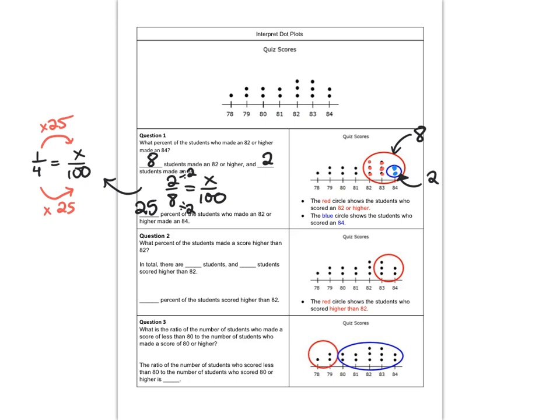All right, let's look at question 2 together and then I'm gonna let you try question 3. So question 2 says what percent of the students made a score higher than 82? So higher than 82 means they had to make an 83 or greater. That's these students right here in our red bubble. So there's five of them. So there were five students who scored higher than an 82. How many students are there in total? Let's count them. 1, 2, 3, 4, 5, 6, 7, 8, 9, 10, 11, 12, 13, 14, 15. So there are 15 students in total.